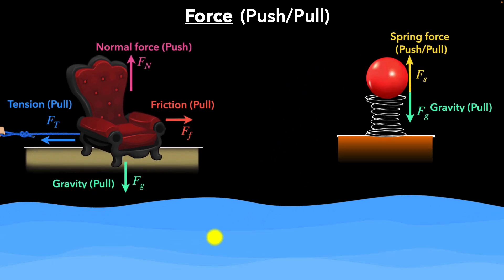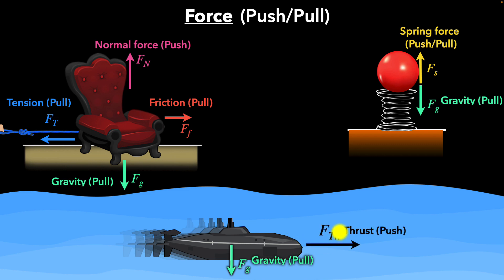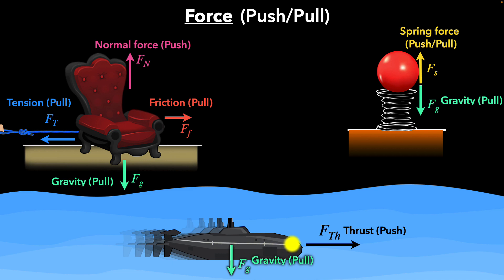Now let's consider a submarine moving underwater. How does the submarine accelerate forward? That's due to a force called thrust. Whenever an object pushes a mass in one direction, the mass pushes back on the object in the opposite direction — that force is the thrust. In this example, the submarine pushes water backward, and so the water pushes the submarine forward, generating the thrust.